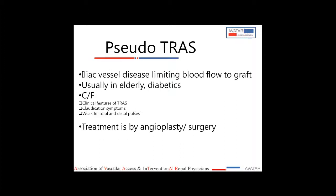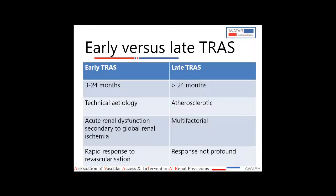Pseudo-TRAS occurs when graft blood flow is limited due to iliac vessel disease, and is usually seen in elderly and diabetic individuals. Apart from the clinical features of TRAS, these patients also have claudication symptoms and on examination show weak femoral and distal pulses on the affected limb. It is managed by angioplasty or surgery, similar to TRAS.